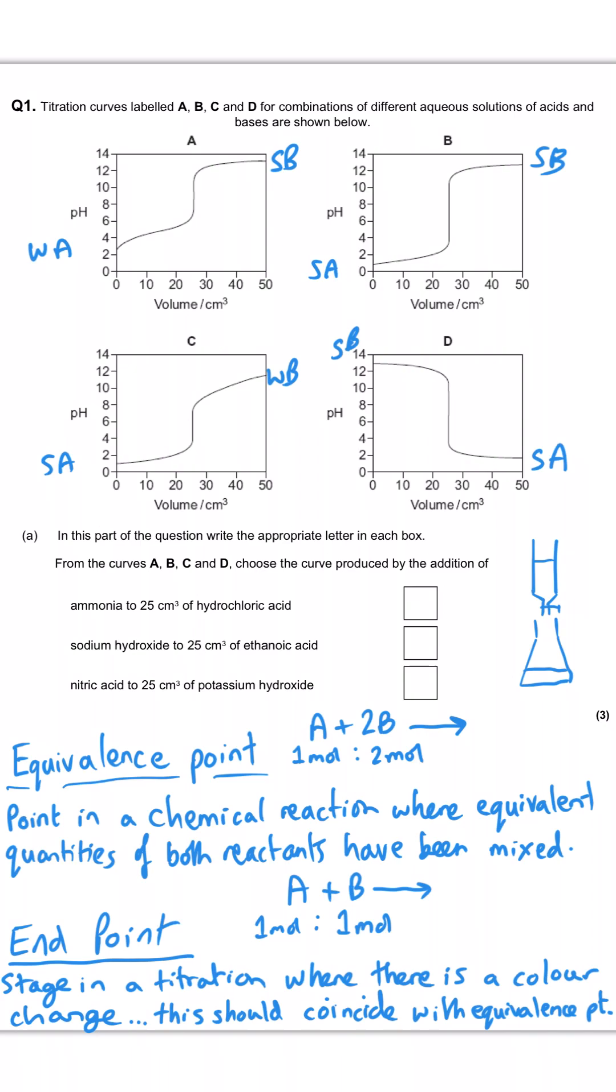And so what we're doing in part A of this question is we're taking a look at these combinations of chemicals, deciding which one must have been in the conical flask and which in the burette, and then which curve that matches up to. And so in the first one, we've got ammonia, which is a weak base, and that is being added to the hydrochloric acid. So that means that hydrochloric acid is down in the flask and ammonia is up here, which means we're going to be starting at the pH of a strong acid and finishing at the pH of the weak base once we've added an excess of ammonia, which means that the answer is curve C.